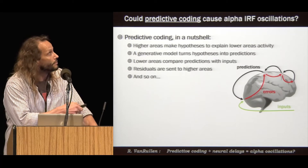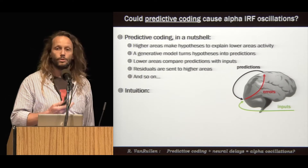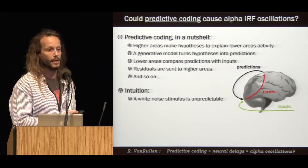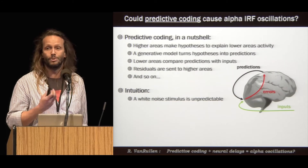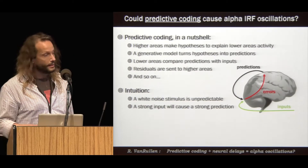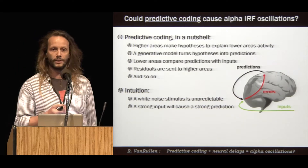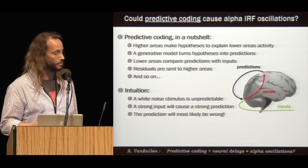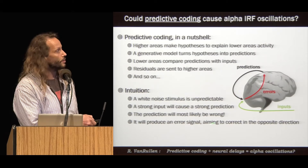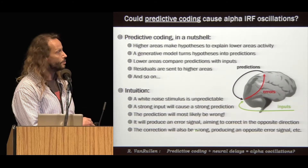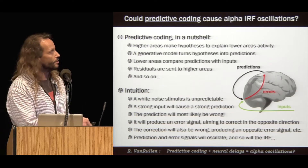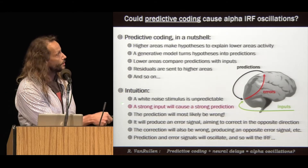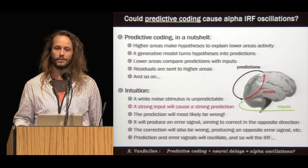What does this have to do with alpha oscillations? Before showing you the model, let me give you the intuition. When we compute impulse response functions, we do it with white noise stimuli, which are by definition unpredictable. That's very bad news for a predictive coding system. In these random sequences, an input that is stronger than average, just by chance, would cause a stronger than average prediction. But the prediction will be wrong because the stimulus is unpredictable. This will produce a large error signal aiming to correct in the opposite direction, but the correction will also be wrong, producing an opposite error signal, and so on. Both the prediction and the error signals will oscillate out of phase, and because the whole process was triggered by something in the stimulus, the IRF will also oscillate.